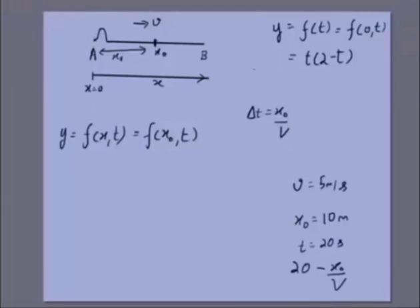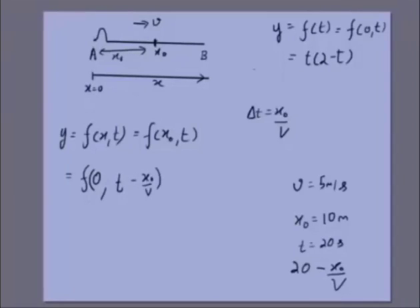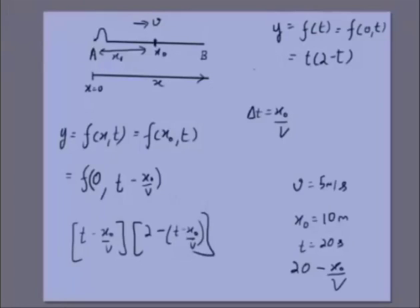In general, f(x₀, t) = f(0, t − x₀/v). If f(0, t) = t(2 − t), then f(x₀, t) = (t − x₀/v)(2 − (t − x₀/v)). We simply subtract the travel time x₀/v and use the known displacement at the origin at that earlier time.